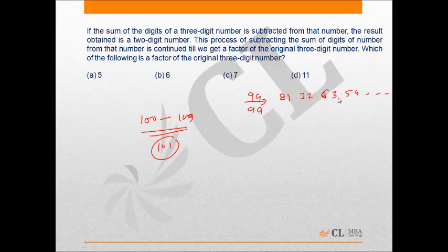It is given that this process of subtracting the sum of digits of the number from that number continues until we get a factor of that original three-digit number. The question asks which of the following is a factor of the original three-digit number.